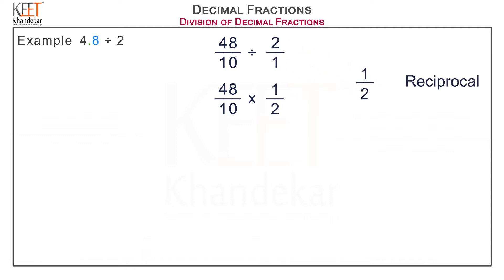Now reduce the numerator 48 and denominator 2. That is, 2, 24, or 48, and 2 ones are 2. So we get 24 upon 10 multiplied by 1 upon 1.